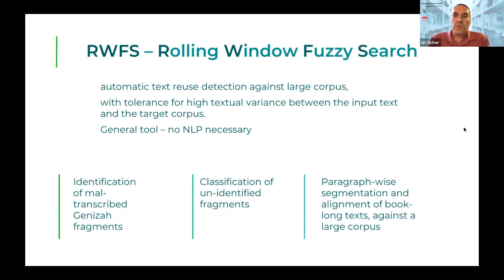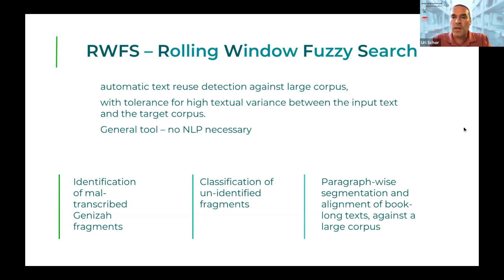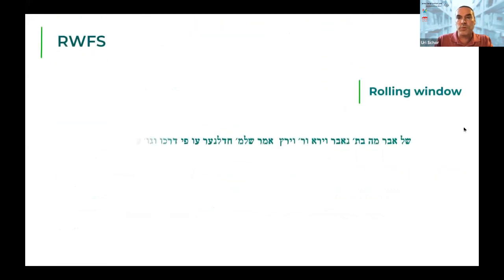Later on, when we worked on book-long texts in the Tikkun Sofrim project — the artifacts of the HTR of full Tanchuma manuscripts — we adapted the Rufus algorithm to segment and align the long texts into paragraphs in the target library, in the search corpus.